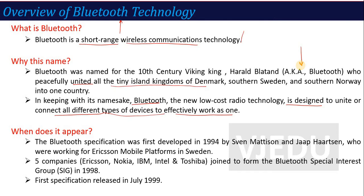The Bluetooth specification was first developed in 1994 by Sven Madison and Jaap Hudson, who worked for Ericsson Mobile Platform in Sweden. After that, five companies — Ericsson, Nokia, IBM, Intel and Toshiba — joined to form a Bluetooth Special Interest Group in 1998, and the first Bluetooth specification was released in July 1999. So the first Bluetooth version was available in 1999.